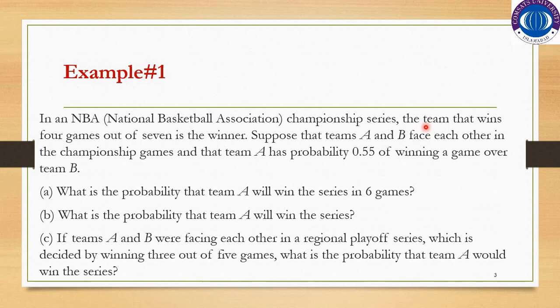The second property is that the Trials are not fixed. We want Team A to win their 4 games in the Championship, so we continue playing Trials until Team A wins the 4th game. They are playing a series of 6 games. The third property is that the Trials are independent, and the probability of success is constant at 0.55 for each game.